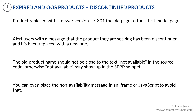The old product name should not be close to the text "not available" in the source code, otherwise the "not available" text may show up in the SERP snippet. You can even place the non-availability message in a robot head iframe or JavaScript to avoid that. Do this only to improve the CTR on SERPs, and not to attempt to game search engines.